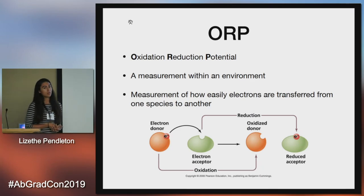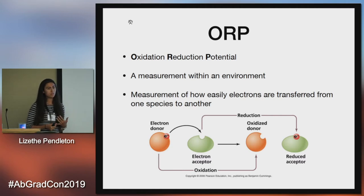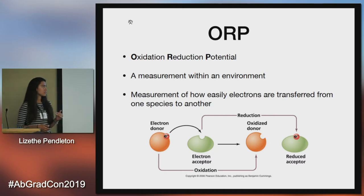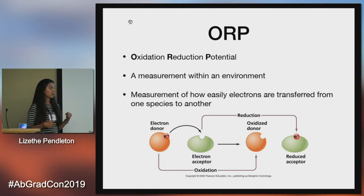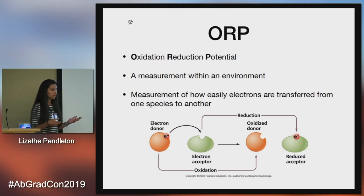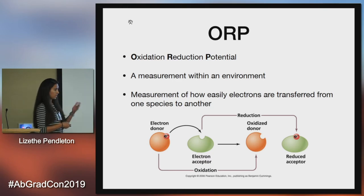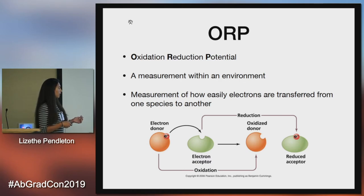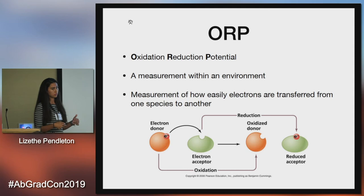ORP, or Oxidation Reduction Potential, is a measurement within an environment. Earlier I mentioned the pH scale, which is a measurement of the hydrogen ions present in the environment. ORP is similar, but instead of what's in the environment, it tells you how easily electrons are transferred from one species to another. In case you remember OIL RIG — oxidation is loss, reduction is gain. We have electron donors, which donate to the electron acceptor, meaning they become oxidized — they're losing that electron. Electron acceptors, who accept the electron, become reduced when they gain that electron from the donor.